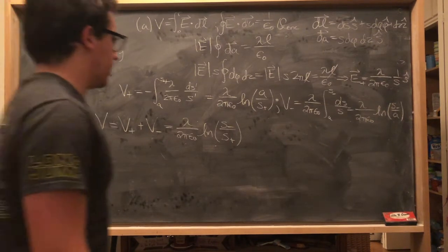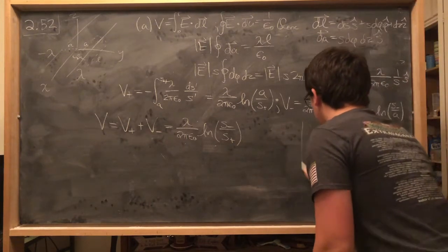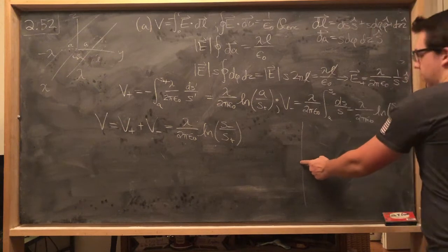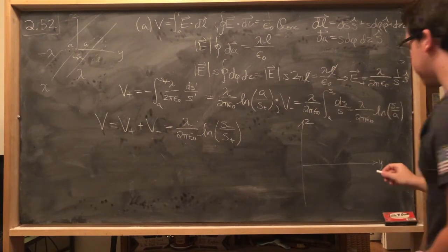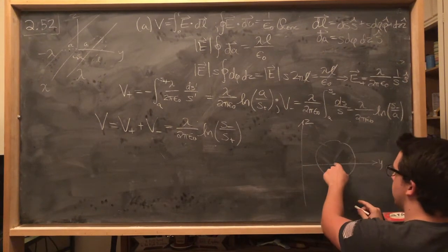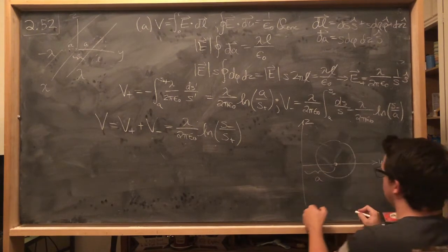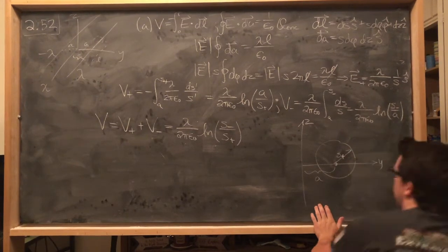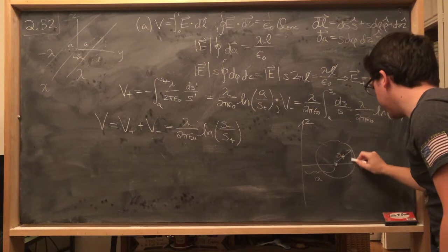And so now, our final order of business to get this into cartesian coordinates is to figure out what is S minus and what is S plus. So let's draw this out. Let's look at, let's imagine that we're looking down the x-axis, and then this would be the y-axis, and this is the z. And we can imagine that if we have our positive lambda wire going into the board right here, this is going to be a distance a along the y-axis, and then our S would just be this.